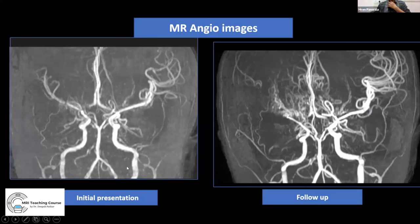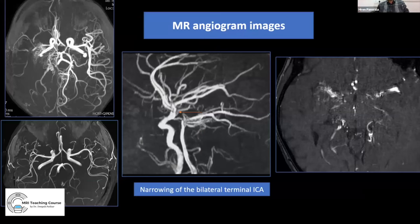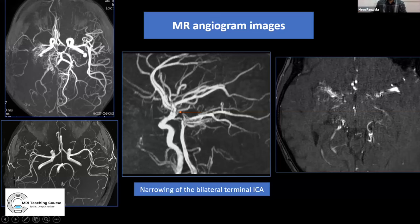On follow-up, the terminal ICA occlusion worsened with development of numerous collaterals giving the classic 'puff of smoke' appearance. The right MCA was no longer visualized, indicating progressive narrowing — consistent with a progressive condition such as Moyamoya syndrome. Sagittal images confirmed narrowing of the MCA and bilateral terminal ICA. It is important to always review source images on MR angiogram as reconstruction artifacts can be misleading. Source images revealed numerous collaterals in the Sylvian fissure and basal cisterns due to chronic occlusion.